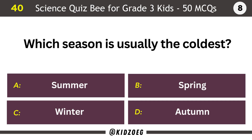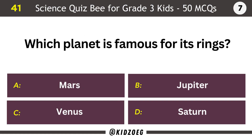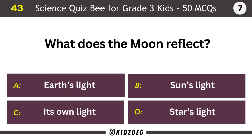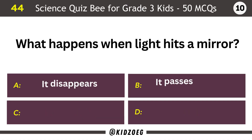Which season is usually the coldest? Winter. Which planet is famous for its rings? Saturn. Which planet is farthest from the Sun? Neptune. What does the Moon reflect? The Sun's light.